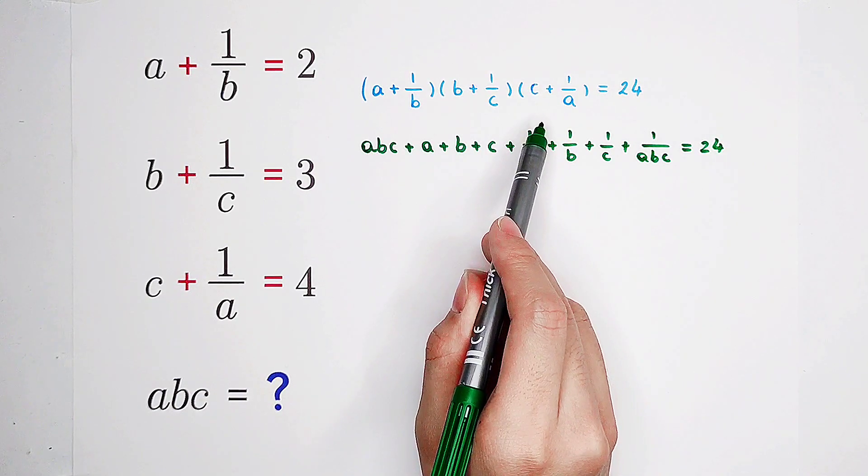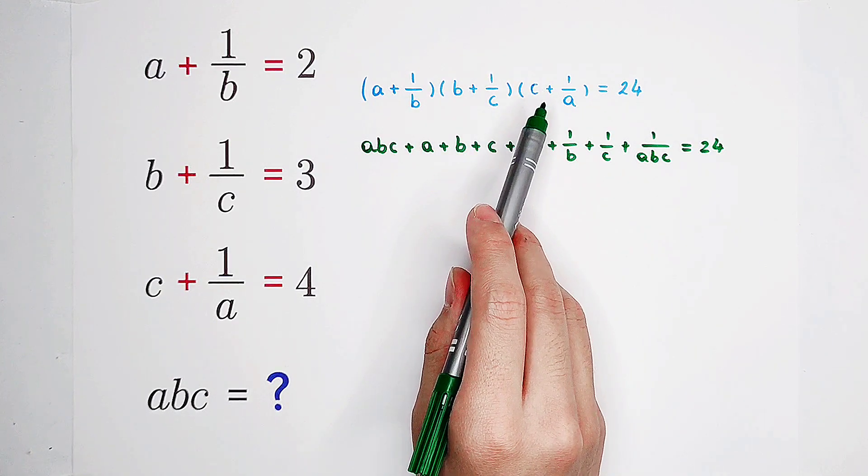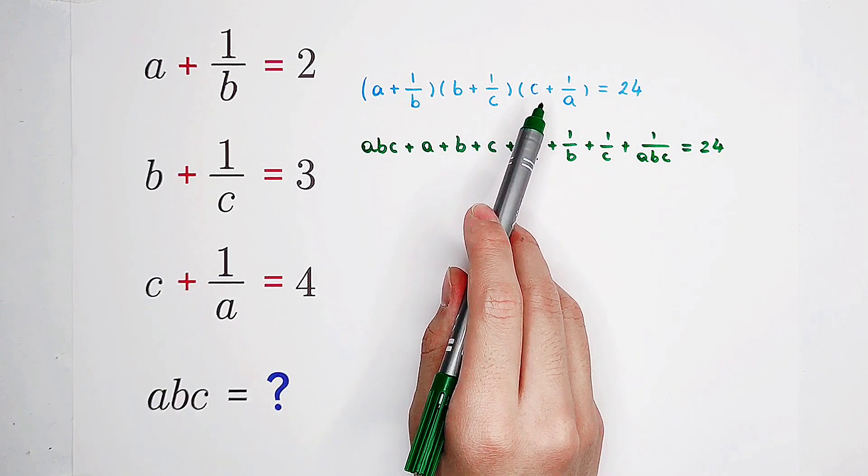We have to choose one of them in each factor. So we have two times two times two, two to the power of three. In total, eight possibilities.